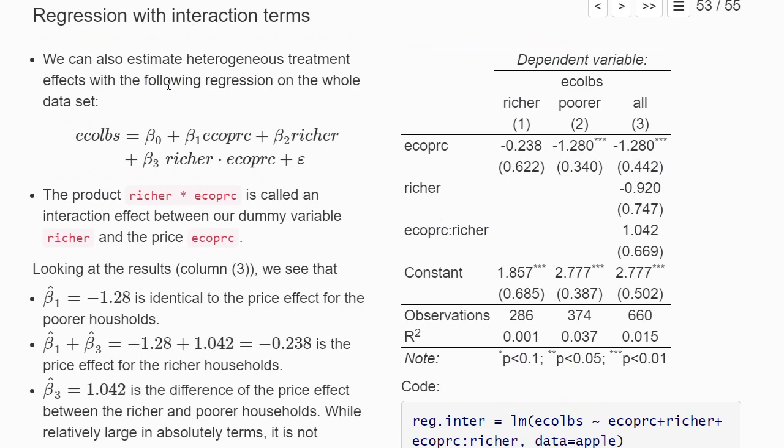Instead of estimating separate regressions for subgroups, one can also account for heterogeneous effects by estimating one regression on the whole sample, but adding so-called interaction terms. So this is the regression we could estimate.